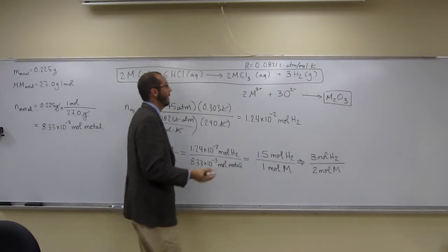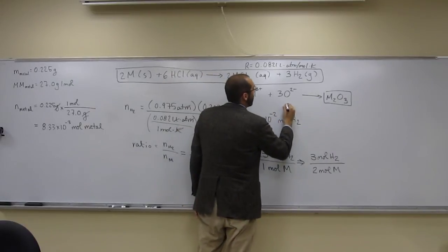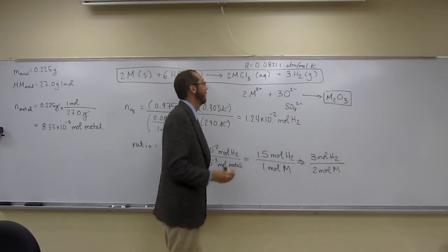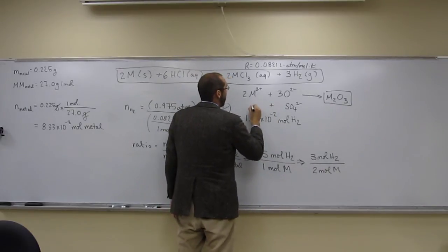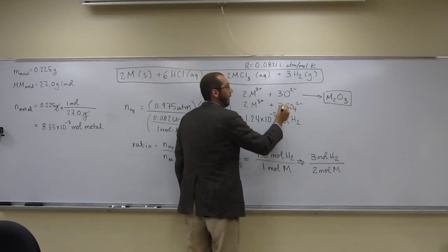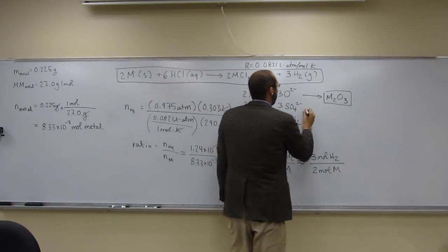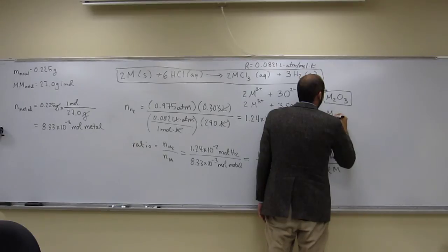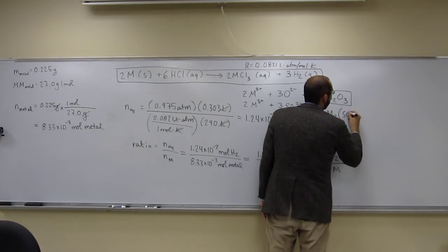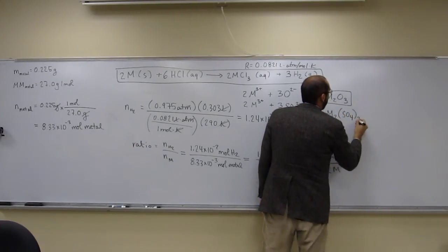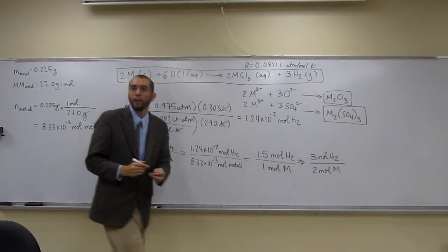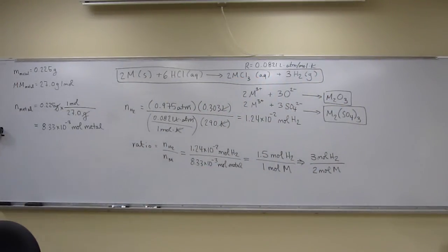The sulfate has the same overall charge situation as the oxide — sulfate (SO₄²⁻) has a −2 charge, just like oxide. With a 3+ metal, we need 2 metal ions and 3 sulfate groups, giving us the formula M₂(SO₄)₃.